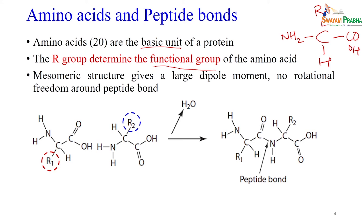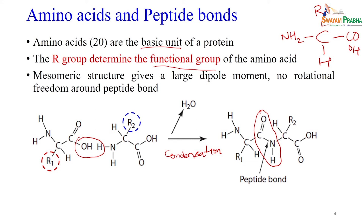When two amino acids combine in a condensation reaction, the resulting linkage is: NH₂-CHR-C=O linked to NH-CHR₂-C=O-OH. The C-O-N-H segment here is the peptide bond.